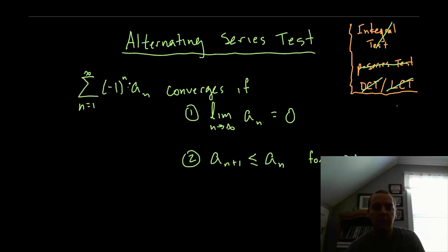Here is what it says. If you have the sum n equals 1 to infinity of negative 1 to the n, or this could be n plus 1, anything that alternates like this times some function of n we will call it a sub n. That's going to converge as long as the terms other than the alternating part go to 0 and every later term is less than or equal to every previous term.